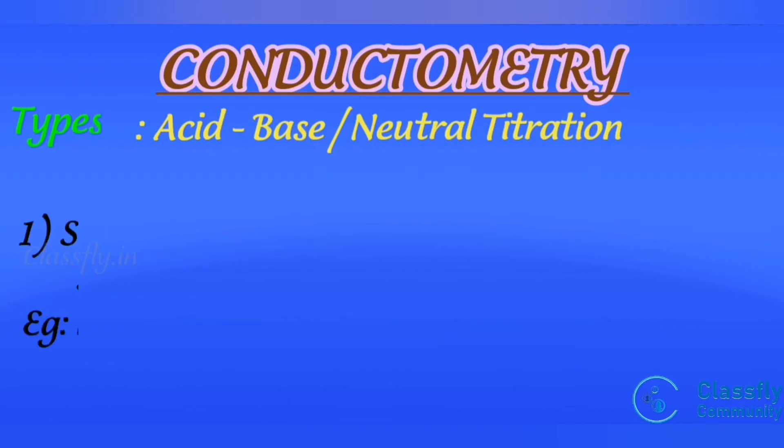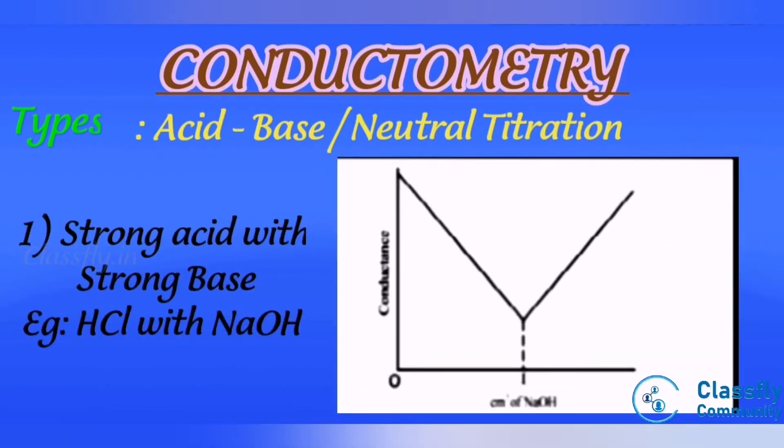Types: acid-base or neutral titration. First one, strong acid with strong base, for example HCl with sodium hydroxide. When the base is added in a HCl solution, the conductance falls due to the replacement of hydrogen ion by the added cation, as H+ ions react with OH- ions to form undissociated water. After the equivalence point, the conductance increases due to the large conductivity of the OH- ion.